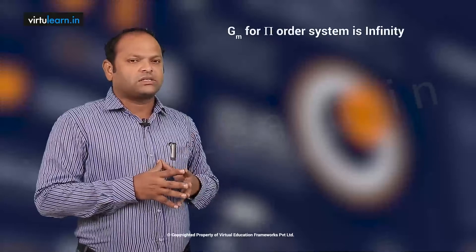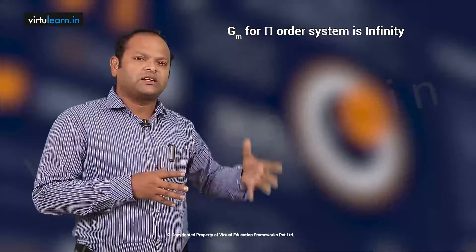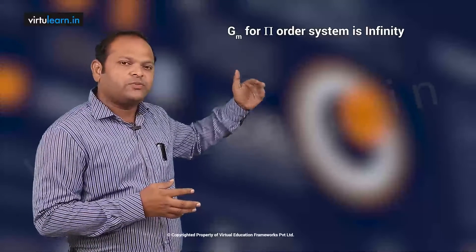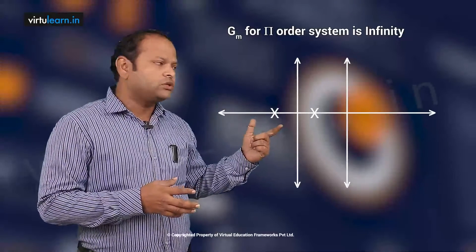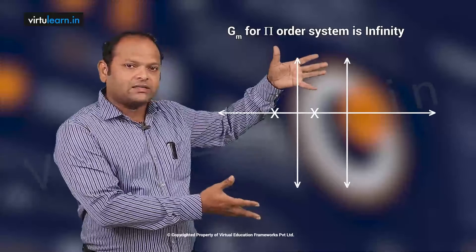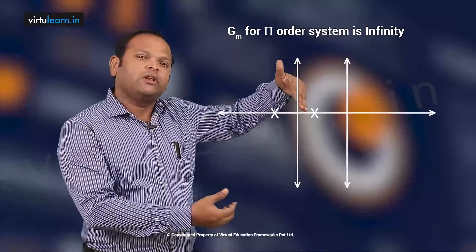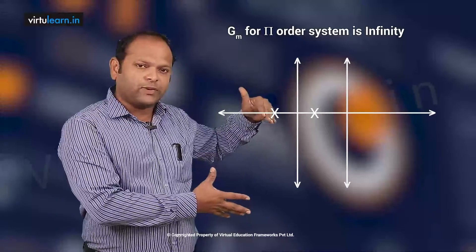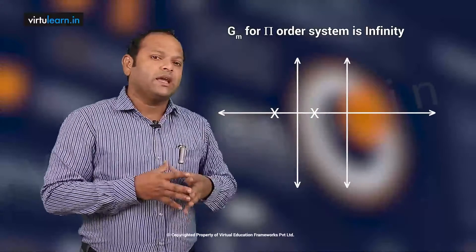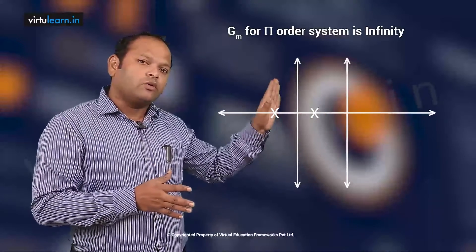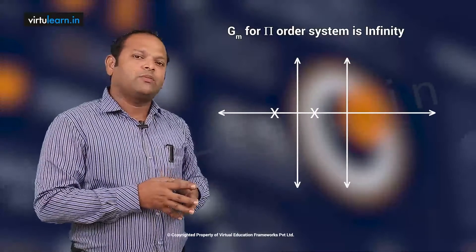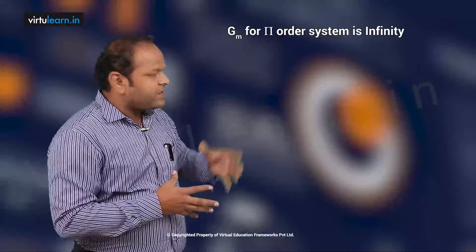For gain margin: the given system is a second order system, and for most second order systems the gain margin is infinity. Because with two poles, the root locus always lies in the left half of the S-plane for all values of k, meaning the system remains stable. Gain margin is infinity only when the root locus never crosses the imaginary axis.